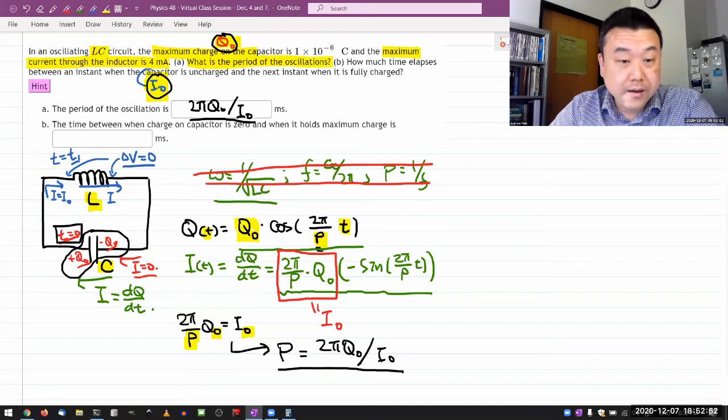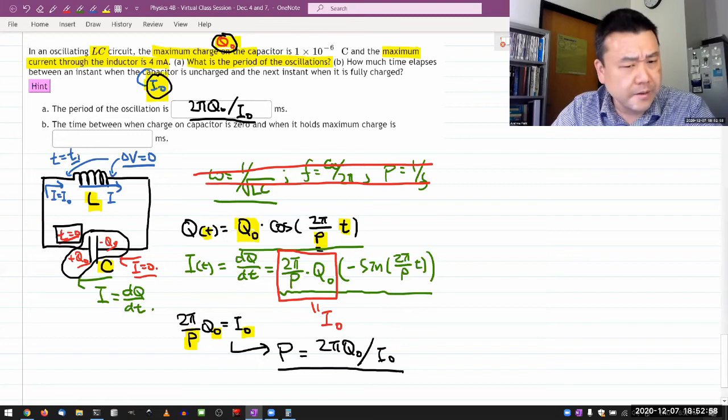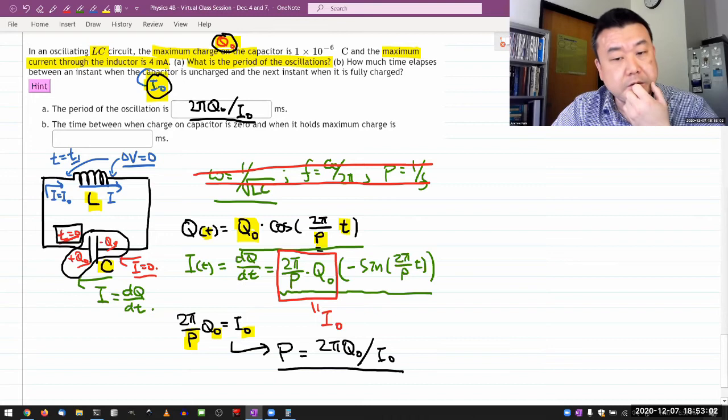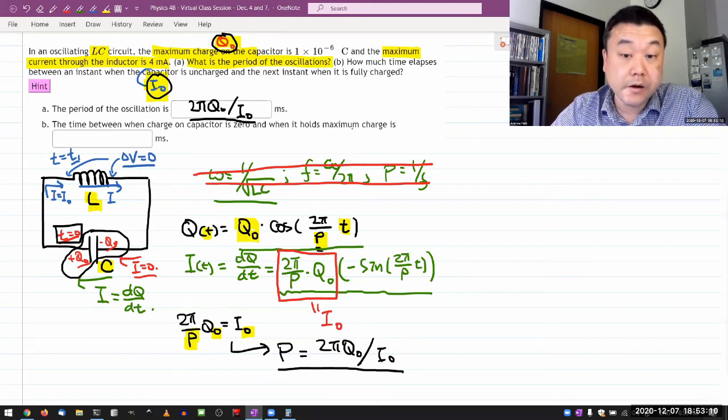So all right, it says okay, so that's the period of oscillation. And for part b, the time between when charge on capacitor is zero and when it holds maximum charges, so I guess I need to figure out what fraction of a period that should be.